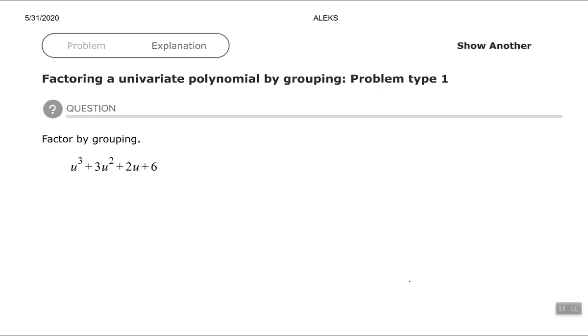The first step for factoring by grouping is to make two groups of binomials using parentheses. And on that first step, you will always have a plus in between the two parentheses. So if there's a minus there, it needs to follow that third term into the parentheses. So you should always have a plus on that first step between the two parentheses.